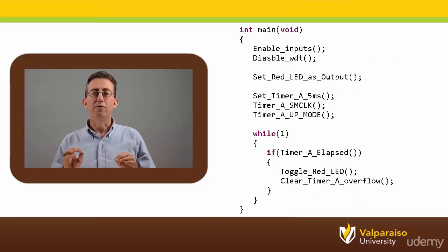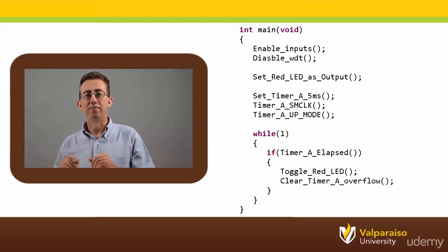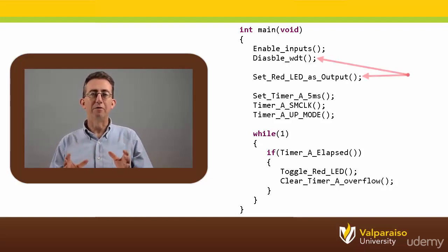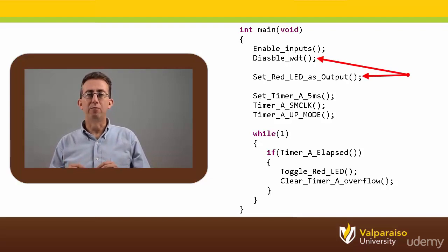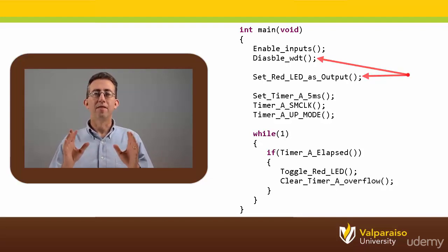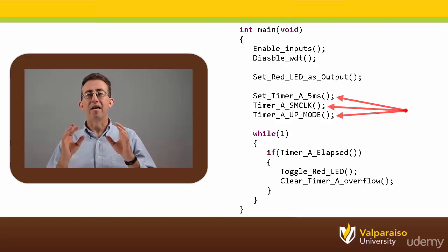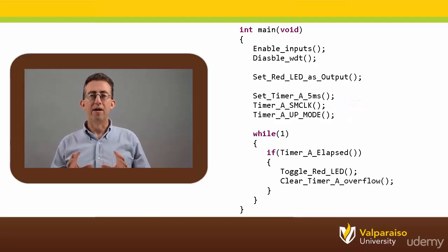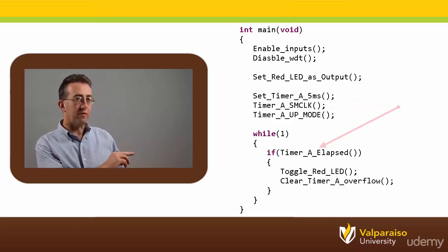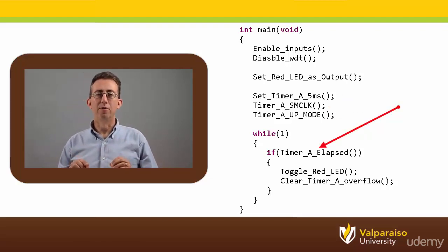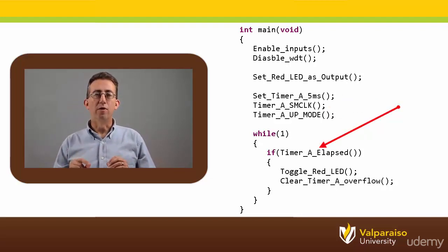Take a look at this program which uses functions to toggle the red LED on and off. The program begins by disabling the watchdog timer and making P1.1 an output. Then three functions are used to initialize a general purpose timer and start counting. Now look closely at the if statement inside of the while loop. Once the timer starts counting, the program is continuously looking to see if the timer is finished counting.